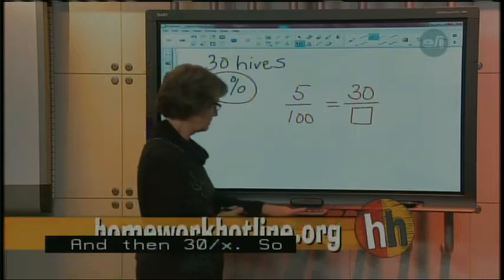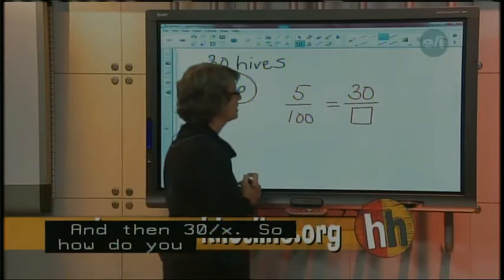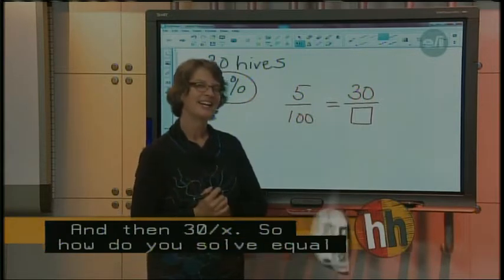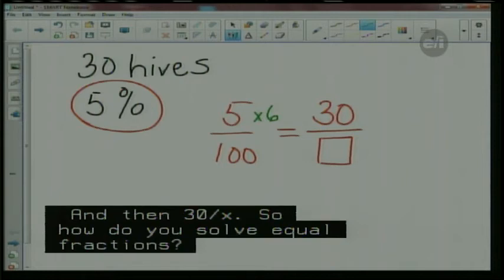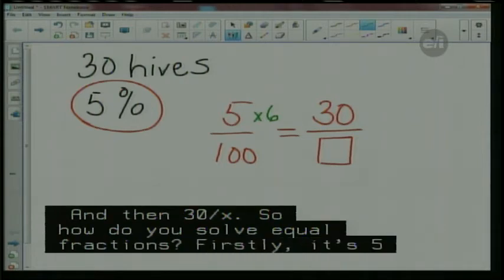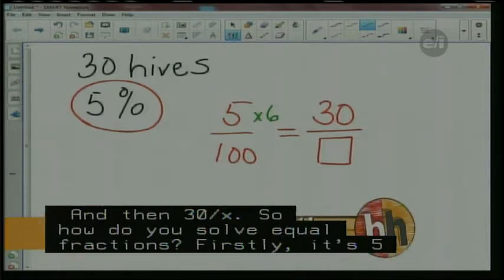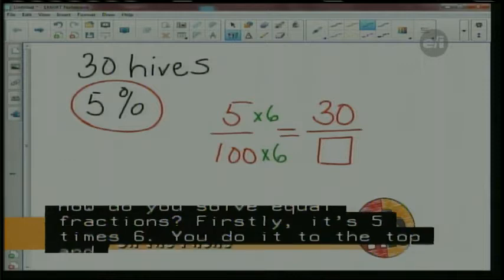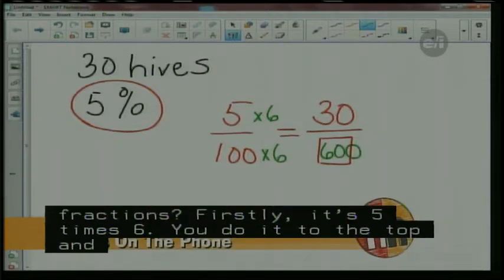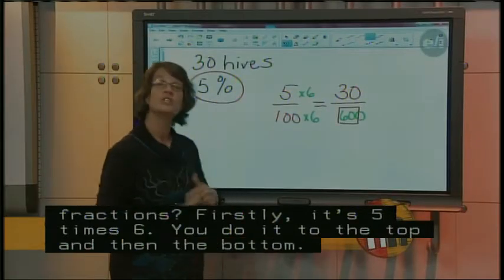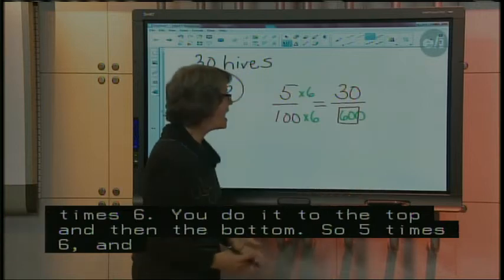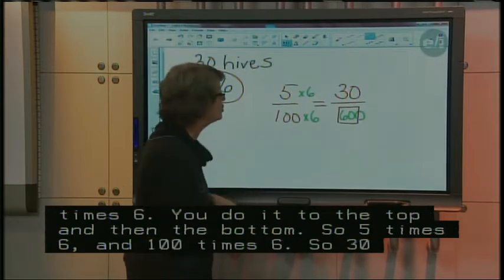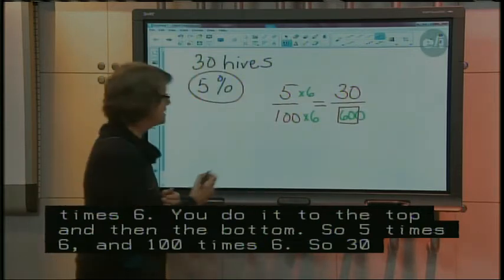So now how would you solve equivalent fractions? What would you do? You'd have to find out how many times the 5 could go into 30. And do you know that answer? It would be times 6. Okay, so 5 times 6 is going to give me the 30. So what do I have to do with the 100 now? Would you multiply it by 6? Yes, because when you're dealing with fractions, what you do to the top you have to do to the bottom. It keeps it equal. So now what's 100 times 6? It would be 600.